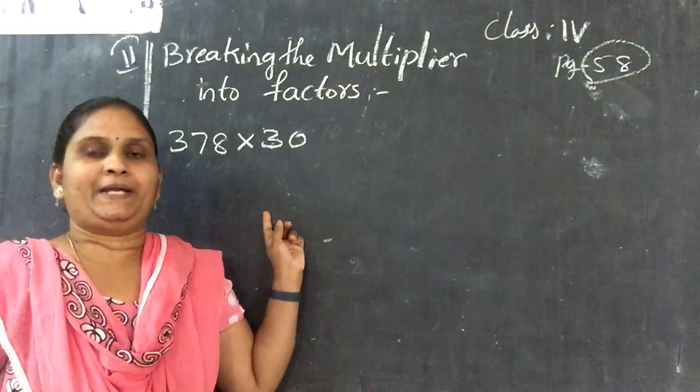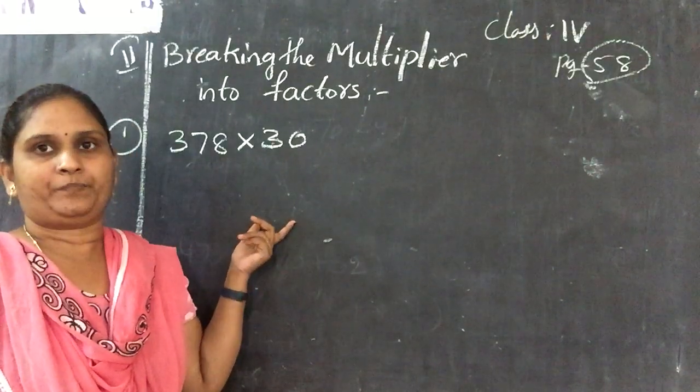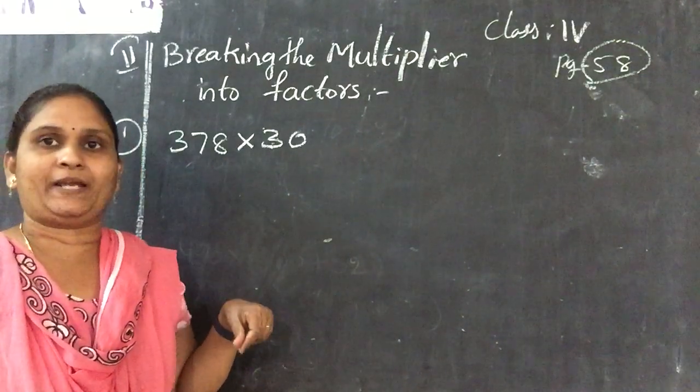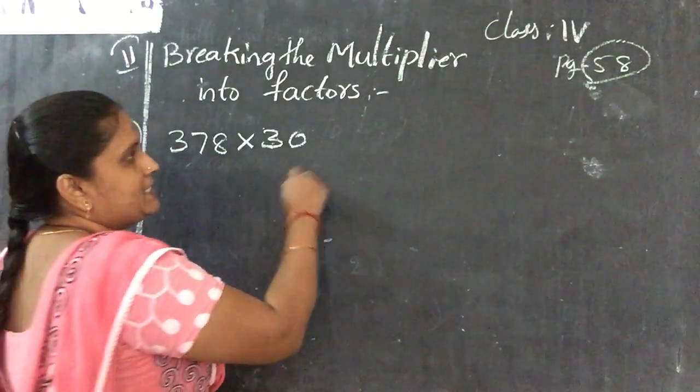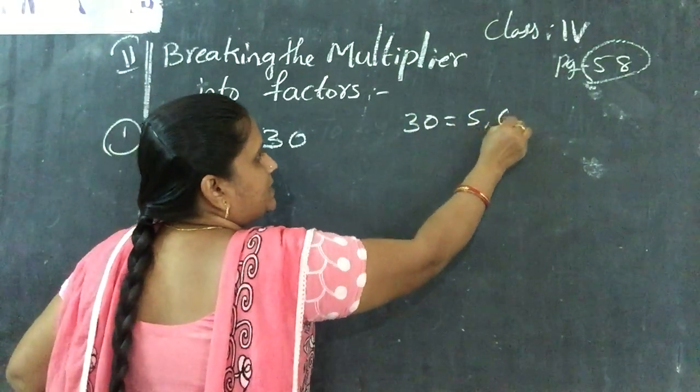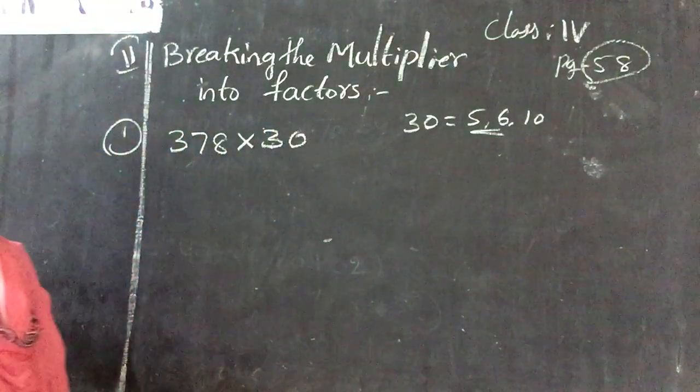So 30, it can be divided, it is having the factor of 6, 5. 6 fives are 30, isn't it? These two are the factors. 10, 3 is also 30, that is also factor. So the factors of 30 is equal to 5, 6 also. So combination of these two we will take it.